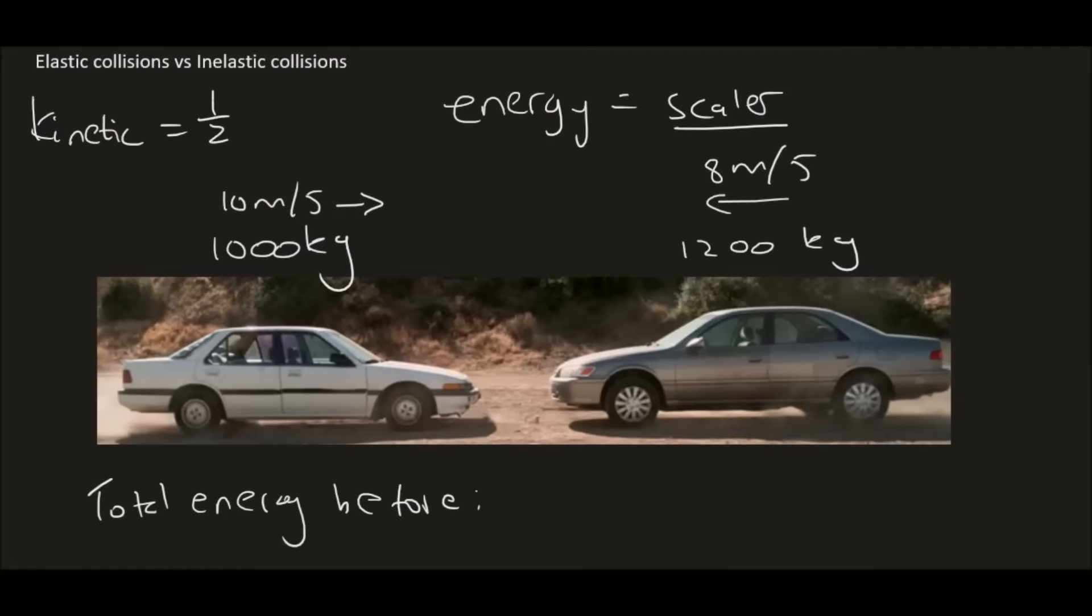And the formula for kinetic energy is a half mv squared. Now I've seen a lot of students forget the square. Now this formula is given to you on the formula sheet. So let's take the first object. That's going to be a half times by its mass, which is a thousand times by its velocity, which is 10 squared. You're then going to say plus. We're not going to worry about direction for energy. And you're going to say half times by the second object's mass, which is a thousand two hundred times by its velocity, which is eight squared. You can then type that in on the calculator and that's going to give you eighty eight thousand four hundred.